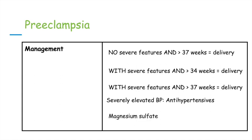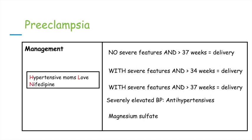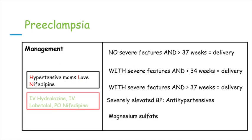Magnesium sulfate can also be used to prevent the development of eclampsia. We can remember which antihypertensives are safe to use in these patients with the mnemonic 'Hypertensive Moms Love Nifedipine' — meaning we can give IV hydralazine, IV labetalol, or PO nifedipine.